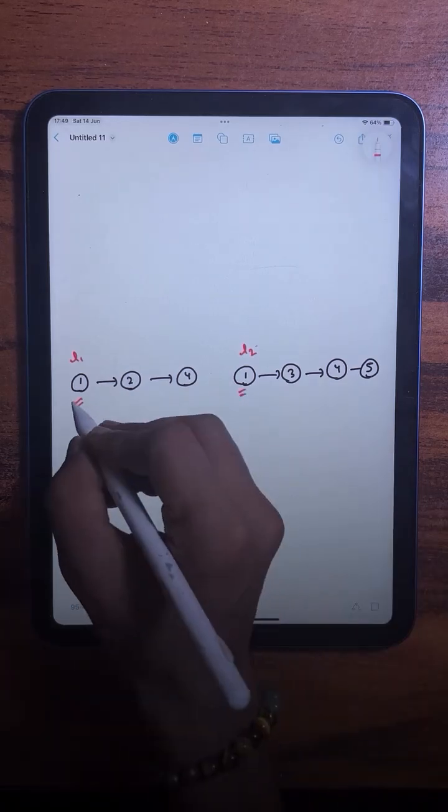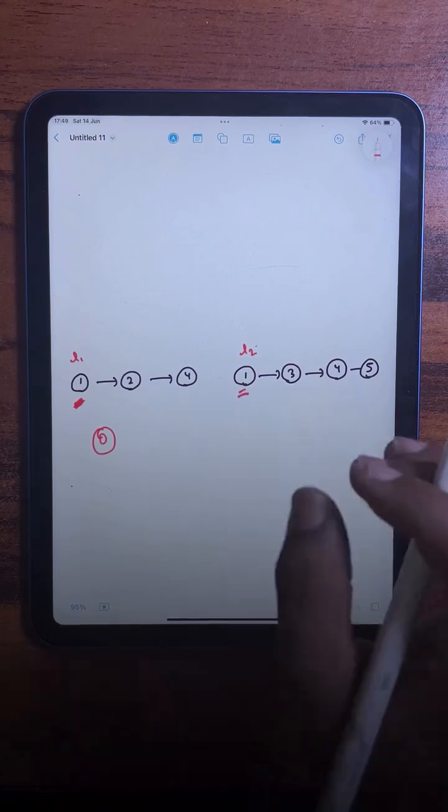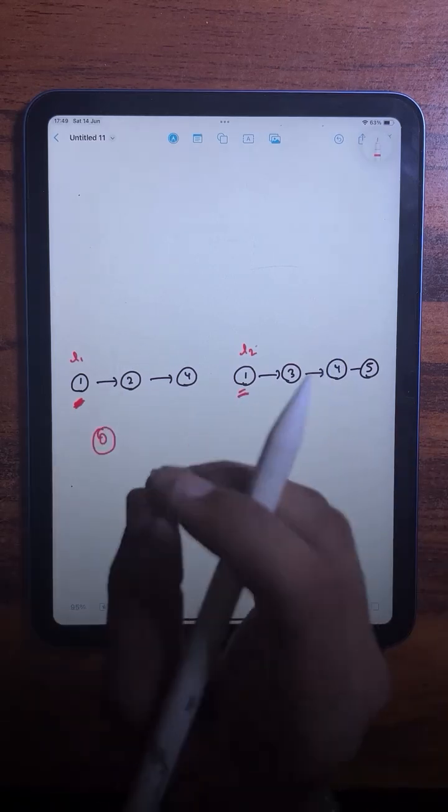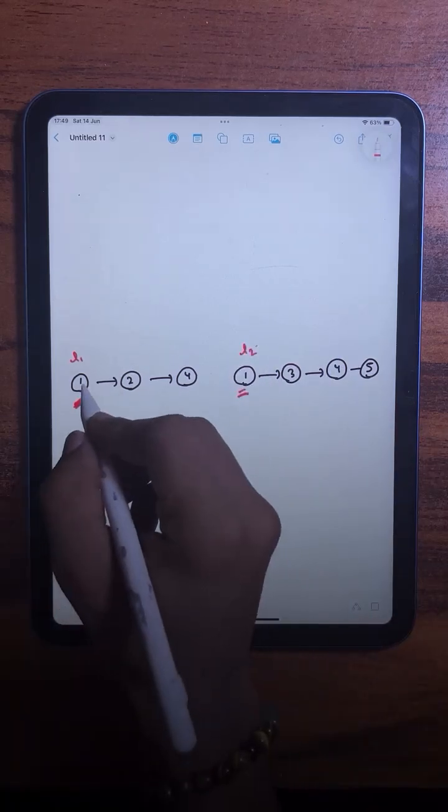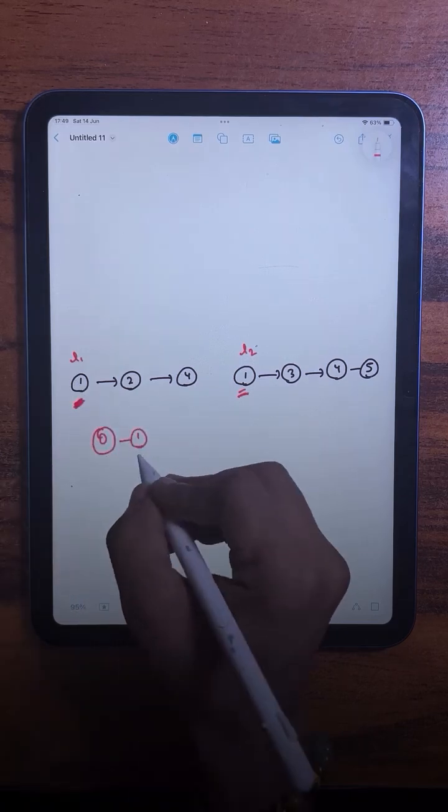Now what we are going to do is compare the current elements. For example, we are comparing this one and this one, and whichever one is smaller, we will add that element to the resultant list. In this case we are going to add this one, and after attaching that element to the resultant list we will move that pointer ahead.